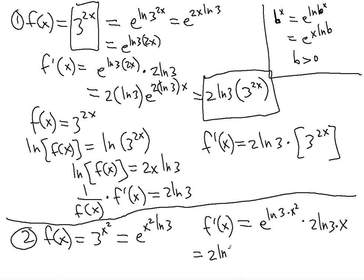So that gives us 2 ln 3 times x, and now we can substitute e to the ln 3 times x squared back to 3 to the x squared. So the final answer is 2 ln 3 x times 3 to the x squared. Once again, use the logarithmic differentiation method just to verify that you'll get the same answer for your own practice. Please subscribe to my channel and I'll see you in the next video.